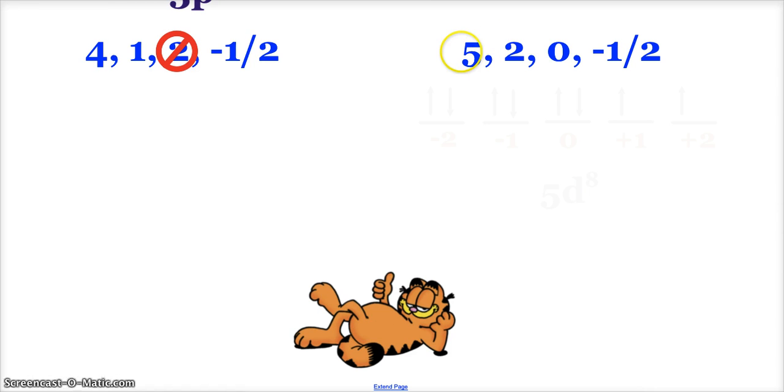Last one here. 5, 2, 0, negative 1 half. Energy level 5. There's 5 sublevels: S, P, D, F, G, represented by 0, 1, 2, 3, and 4. So 2 is valid. 2 is between 0 and 4. 2 represents D sublevel. A D sublevel has 5 orbitals that we label negative 2, negative 1, 0, 1, and 2. So this 0 is totally valid. And the negative 1 half is valid. This is a valid set of quantum numbers.